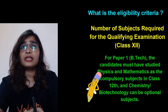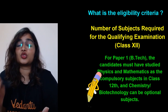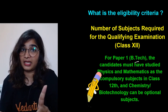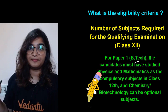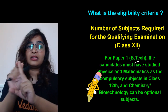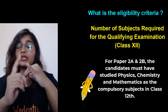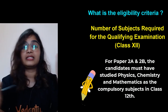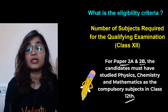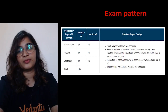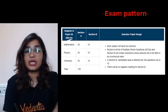What are the number of subjects required in the qualifying examination — that is Class 12? For Paper 1, which is B.Tech, candidates must have studied Physics and Mathematics as compulsory subjects, and Chemistry or Biotechnology as optional. For Paper 2A and 2B, the candidates must have studied Physics, Chemistry, and Mathematics as compulsory subjects in Class 12 — all three PCM subjects are required for Paper 2A and 2B.